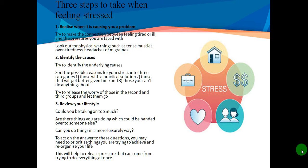Step two: Identify the causes. Try to identify the underlying causes. Sort the possible reasons for your stress into three categories: those with a practical solution, those that will get better given time, and those you can't do anything about. Try to release the worry of those in the second and third groups and let them go.